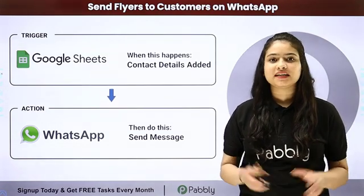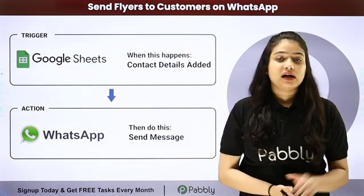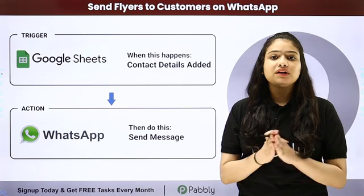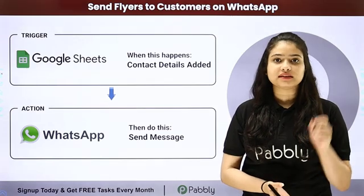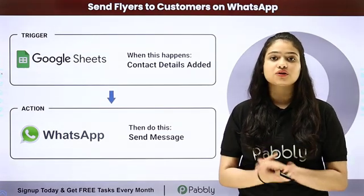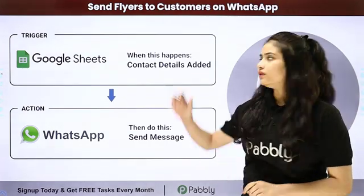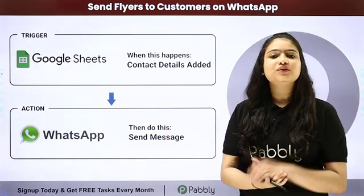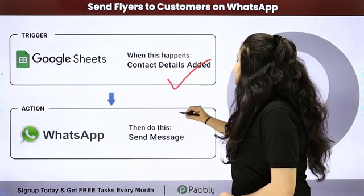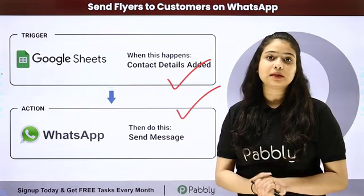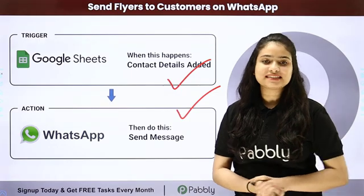Hello everyone, welcome back to Pabbly Connect. In this video, we are going to learn how to send flyers to customers on WhatsApp. Let's suppose I'm having a makeup studio and I have the details of all my customers in my Google Sheets. I want to send automated WhatsApp messages to all these customers at the same time along with the brochures or flyers of my makeup studio. For this we will set up a connection between Google Sheets and WhatsApp using Pabbly Connect - no coding or programming skills required. We are going to take Google Sheets as our trigger and WhatsApp Cloud API as our action to send template messages to all customers.